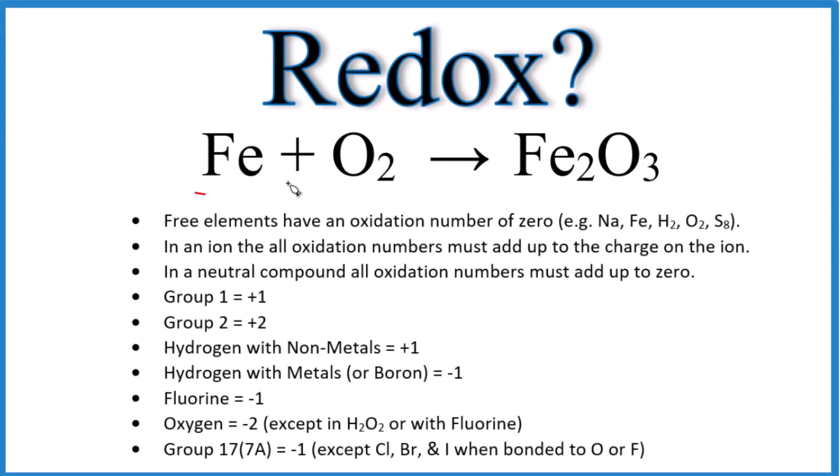So here's how you tell whether Fe plus O2 yields Fe2O3 is a redox reaction. What we'll do is we'll use these rules here to write the oxidation numbers for each element here, each atom, and that way we'll be able to tell if we have a redox reaction. Let's do it.